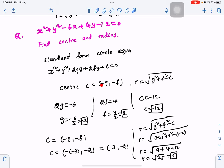Now, we have the center formula minus g minus f. G value is minus 3. So g is minus 3. This is minus 3 as the center.